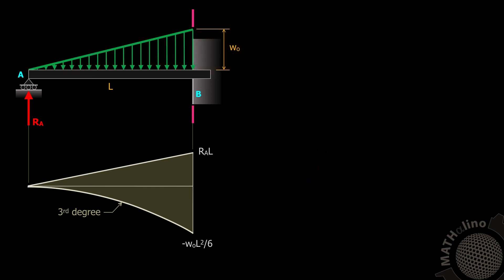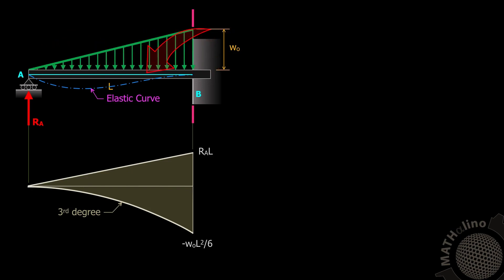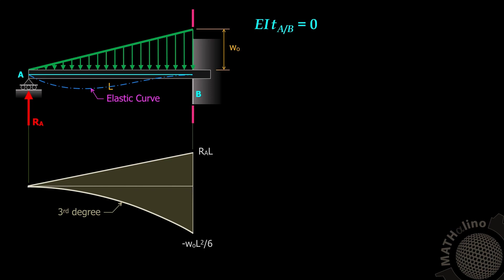The approximate elastic curve of our beam is drawn. We load the tangent to the elastic curve at B. Since B is fixed, the tangent line is horizontal. At A, the vertical distance between the tangent line and the elastic curve is zero. Thus, the deviation of A from the tangent line through B is zero. The formula for deviation is area times x-bar from A, and this equals zero.